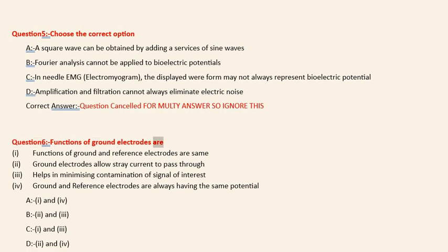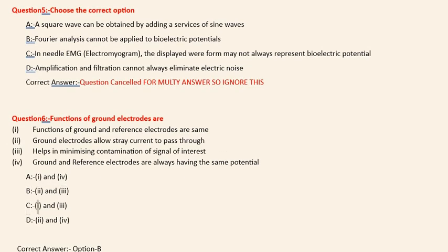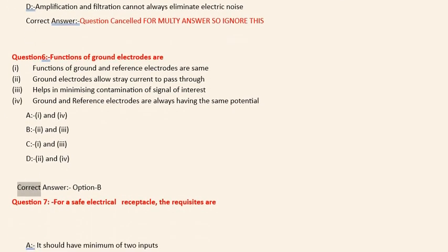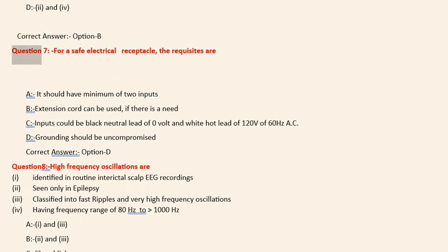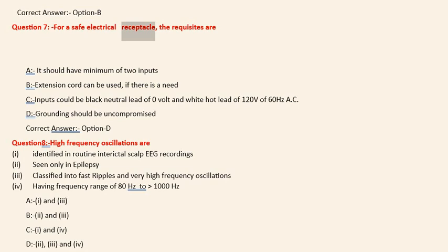Question 6: Functions of ground electrodes are: (i) Functions of ground and reference electrodes are same. (ii) Ground electrodes allow stray current to pass through. (iii) Helps in minimizing contamination of signal of interest. (iv) Ground and reference electrodes are always having the same potential. Options: A. i and iv, B. ii and iii, C. i and iii, D. ii and iv. Correct answer: Option B.